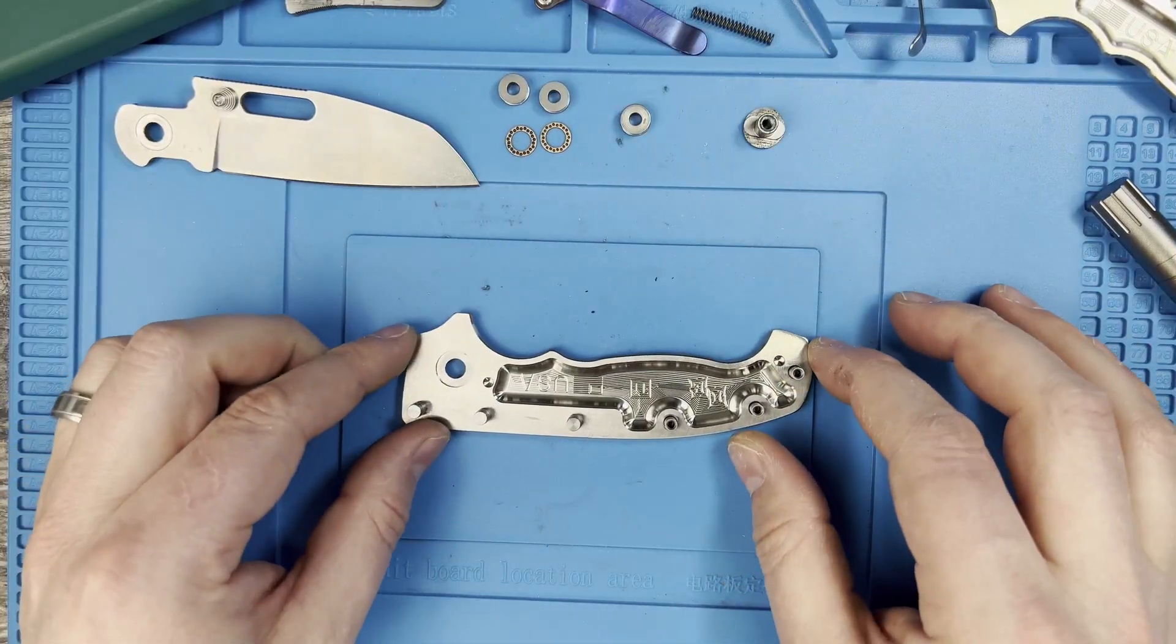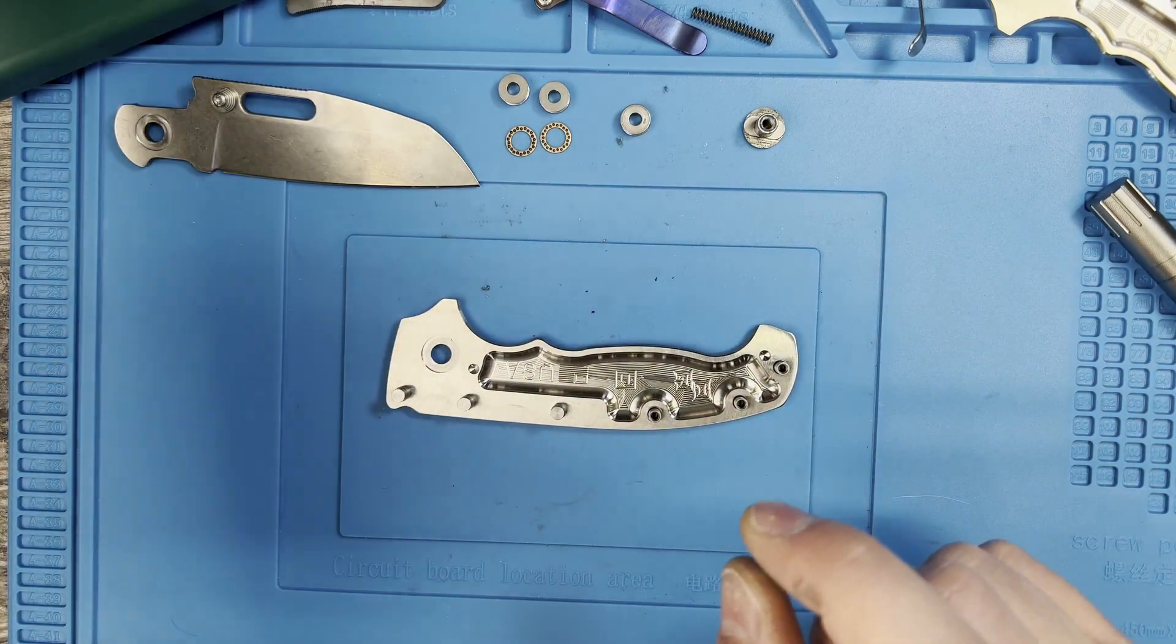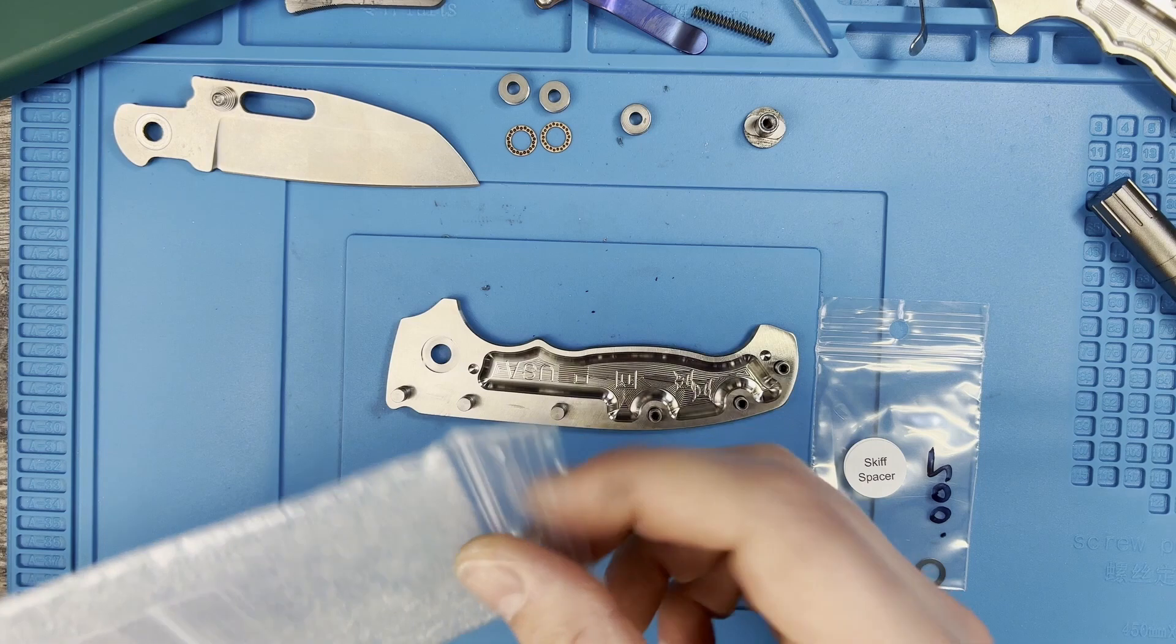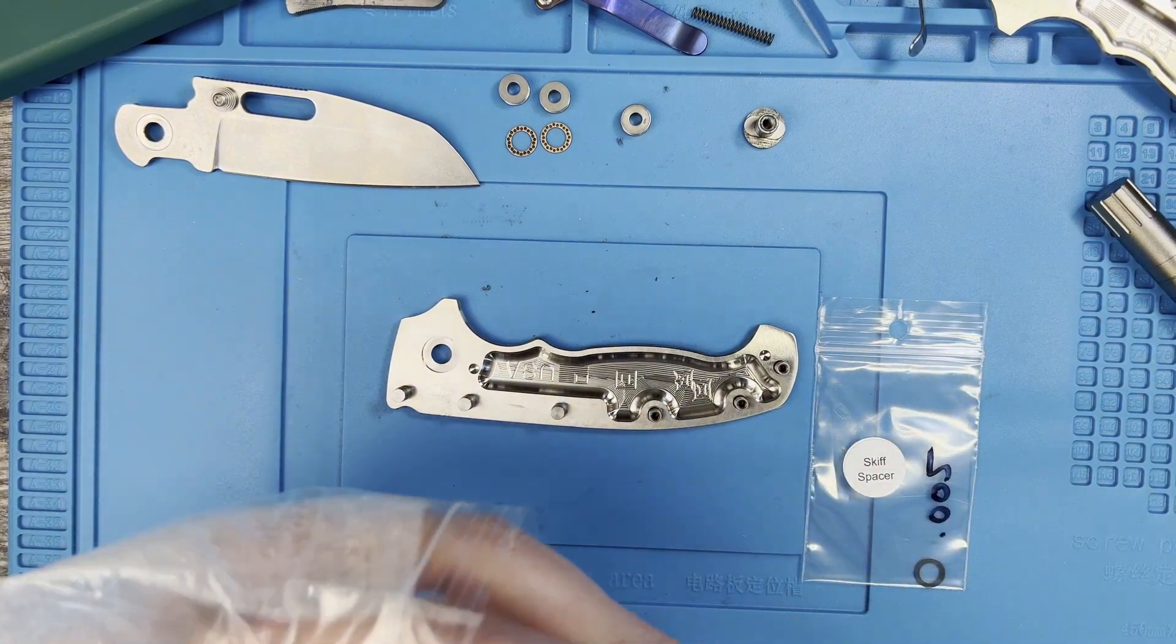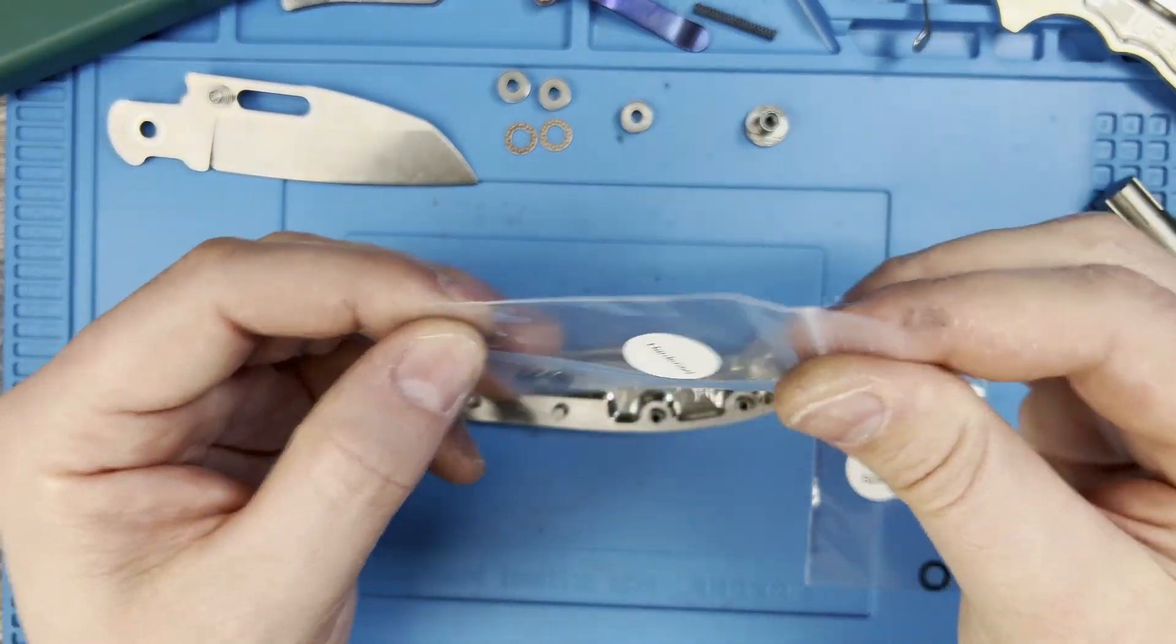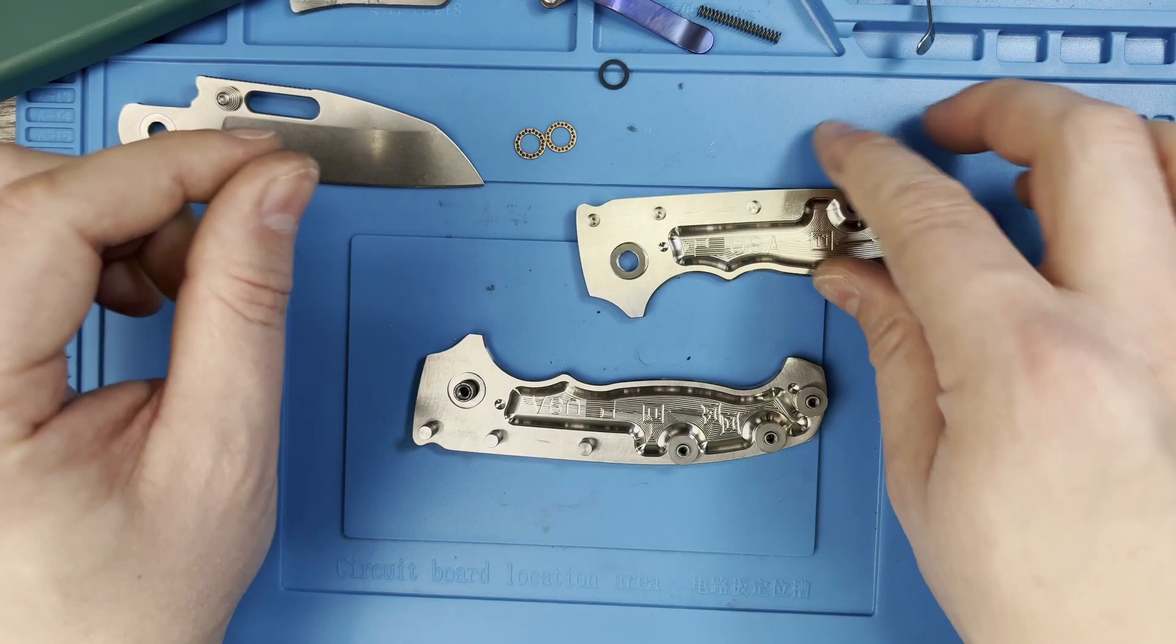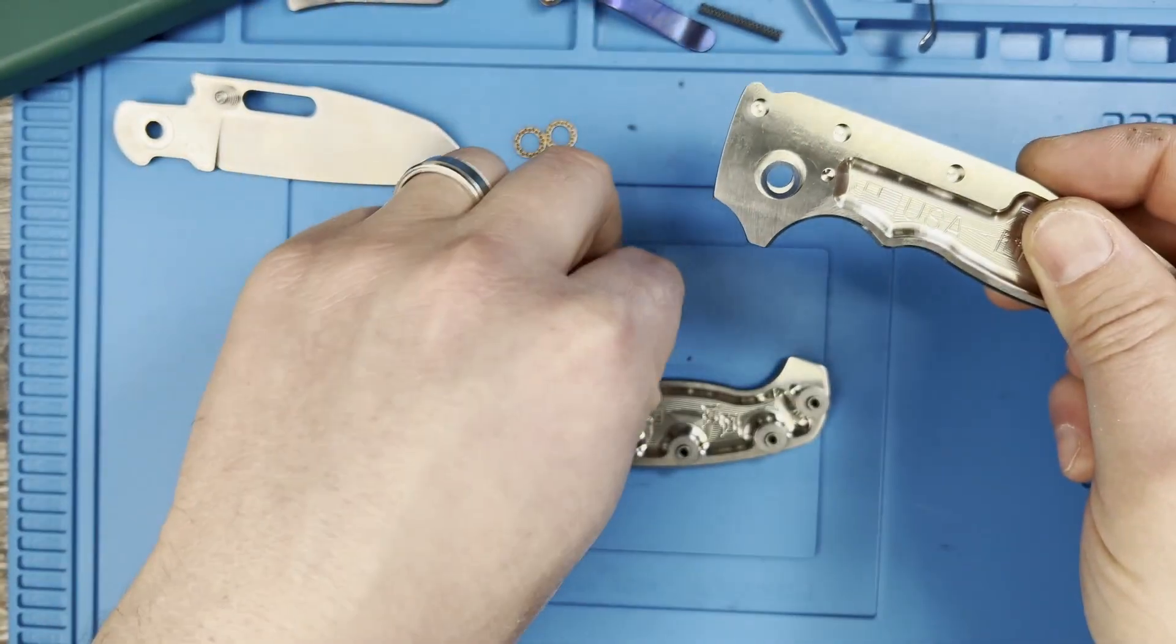All right, after you fumbled around for about five minutes to get everything to sit flush, what you're going to need next is you're going to need these washers, and they do include a skiff spacer in there. So make sure you're using that, and then they have a set of hardened washers in here that you're going to want to install. All right, now that everything is lined back up correctly, go ahead and drop your spacer in.